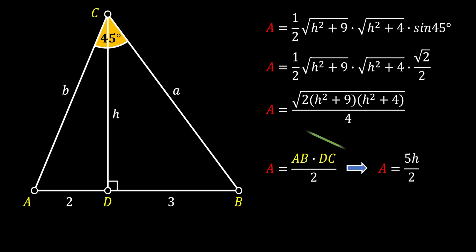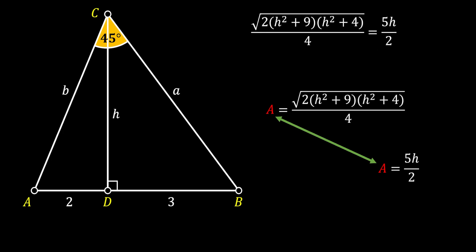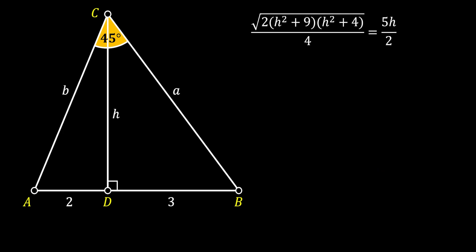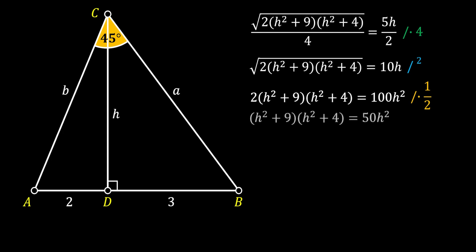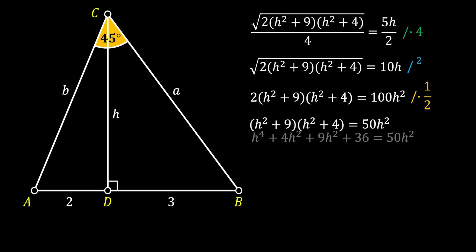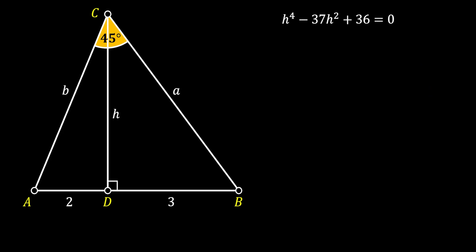Now we notice we have two expressions for the same area, so we set them equal to each other. We first get rid of the fractions by multiplying both sides by 4. Then we square both sides to eliminate the square root, and finally divide both sides by 2. Expanding the left side and rearranging all terms to one side, we arrive at a nice biquadratic equation.